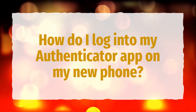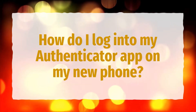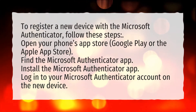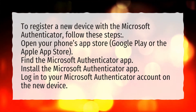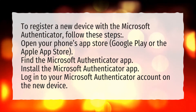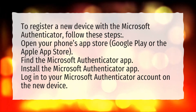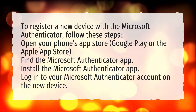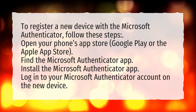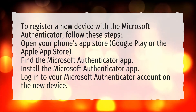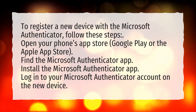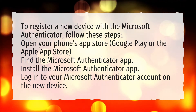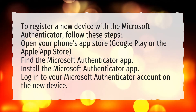How do I log into my Authenticator app on my new phone? To register a new device with the Microsoft Authenticator, follow these steps. Open your phone's App Store — Google Play or the Apple App Store. Find the Microsoft Authenticator app. Install the Microsoft Authenticator app. Log in to your Microsoft Authenticator account on the new device.